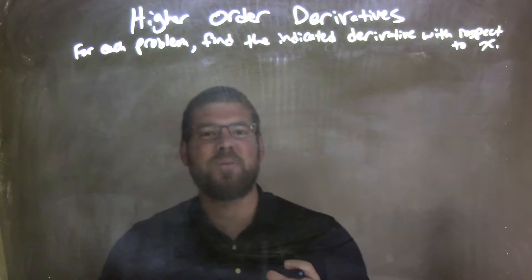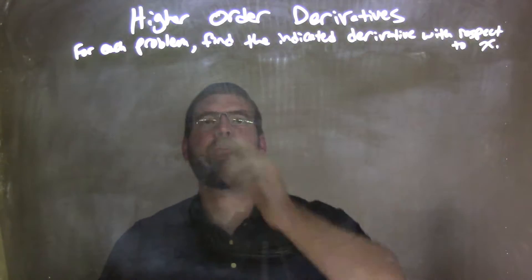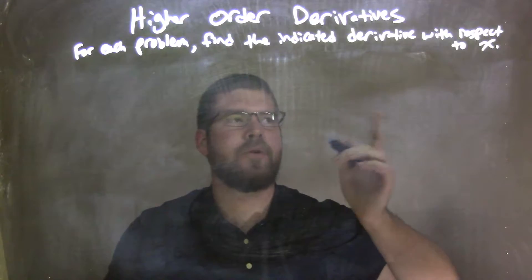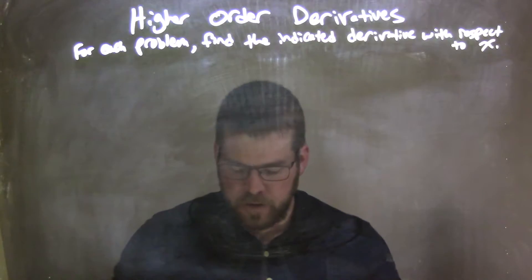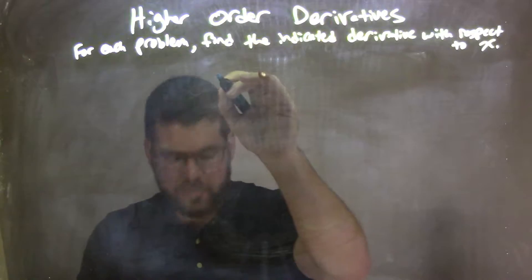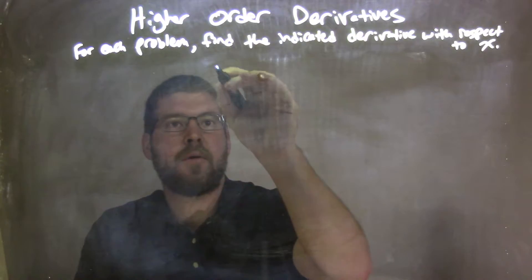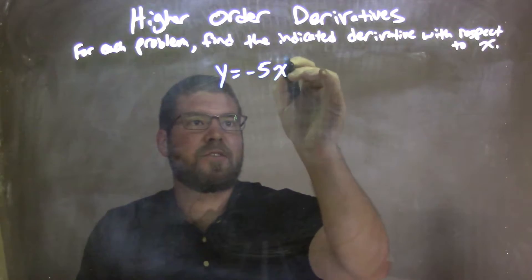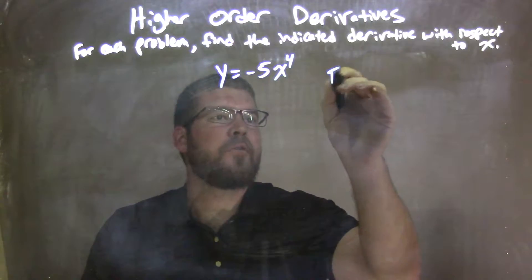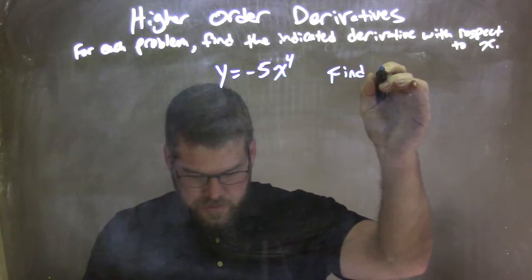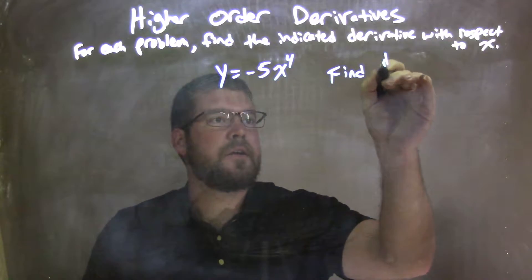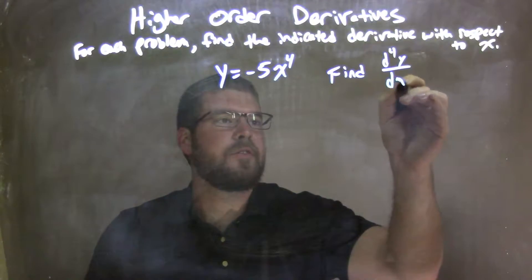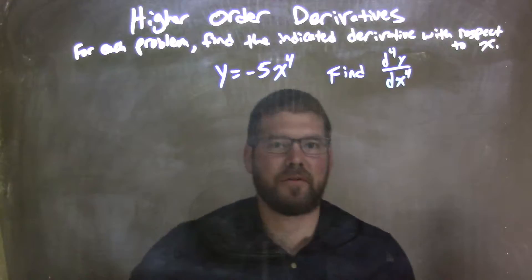Hi, I'm Sean Gannon, and this is MinuteMap. Today we're going to learn about higher-order derivatives. For each problem, we're going to find the indicated derivative with respect to x. So if I was given y equals negative 5x to the 4th, and we want to find d to the 4th power y over dx to the 4th — the 4th derivative.